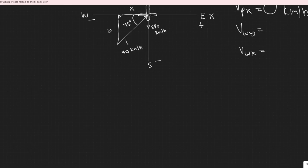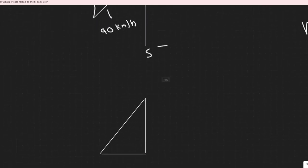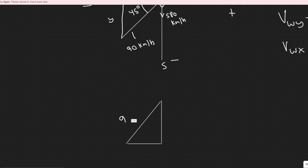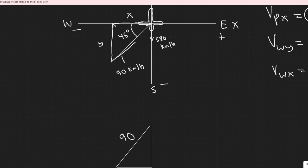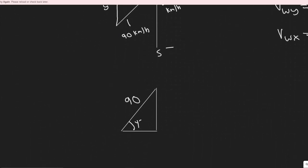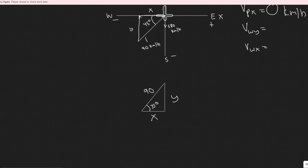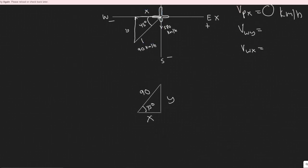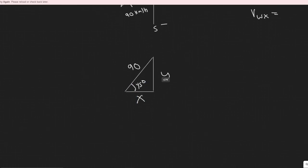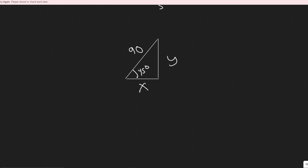To find the wind's x and y components, I'll draw a triangle. The hypotenuse is the wind magnitude of 90, and the angle is 45 degrees. Along one side is x and the other is y. Using SOH-CAH-TOA: cosine of the angle equals adjacent over hypotenuse. So cosine(45°) = x / 90, which means x = 90 × cos(45°).